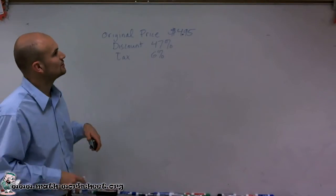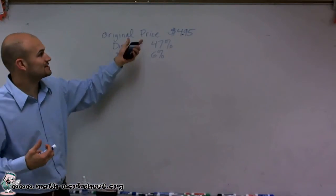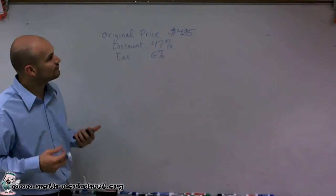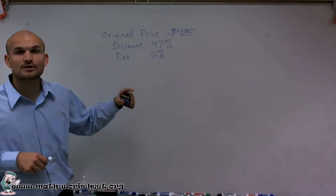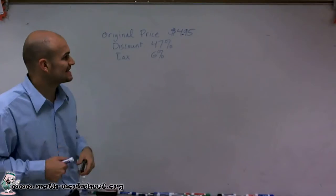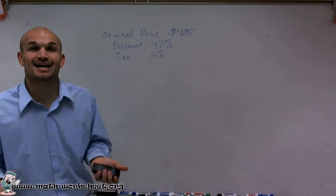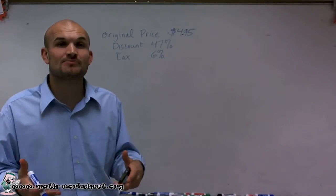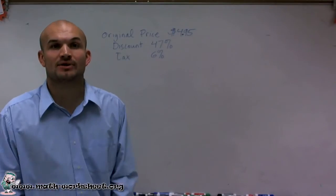Welcome. What I want to do is show you how to calculate the final price when we have a computer game with an original price of $4.95, and we're going to buy that computer game at a discount of 47%, and then calculate the tax to find the actual final price that we're going to have to pay.